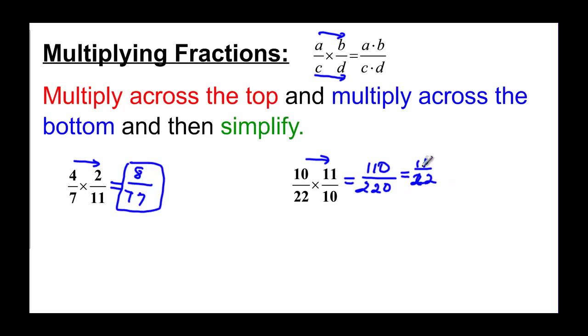When we look at those, well they're both divisible by 11, so this would be 1 times 11 and 2 times 11, so it reduces to 1 half.